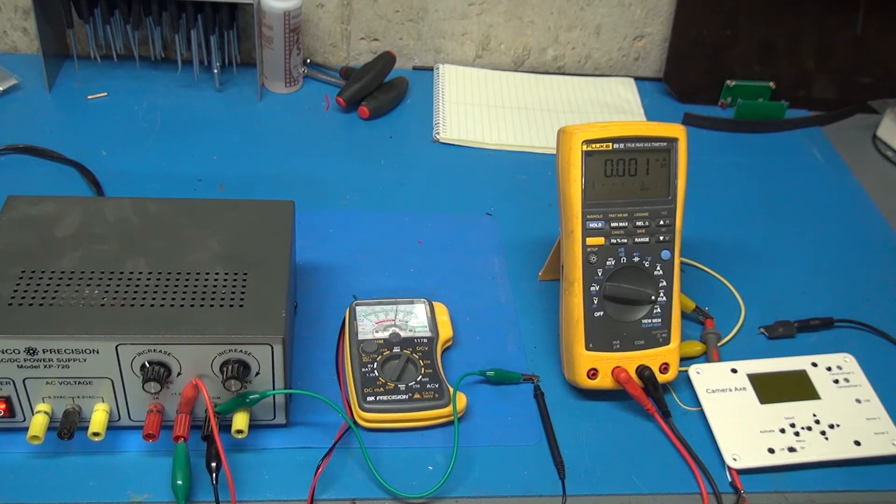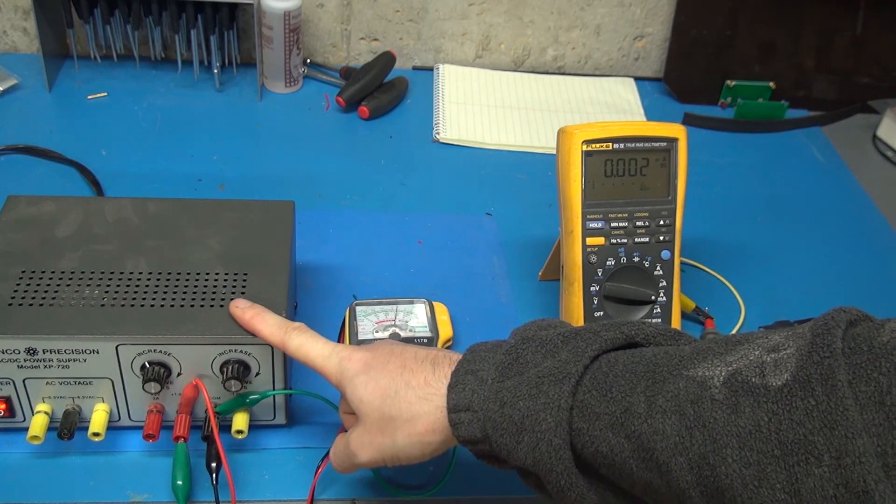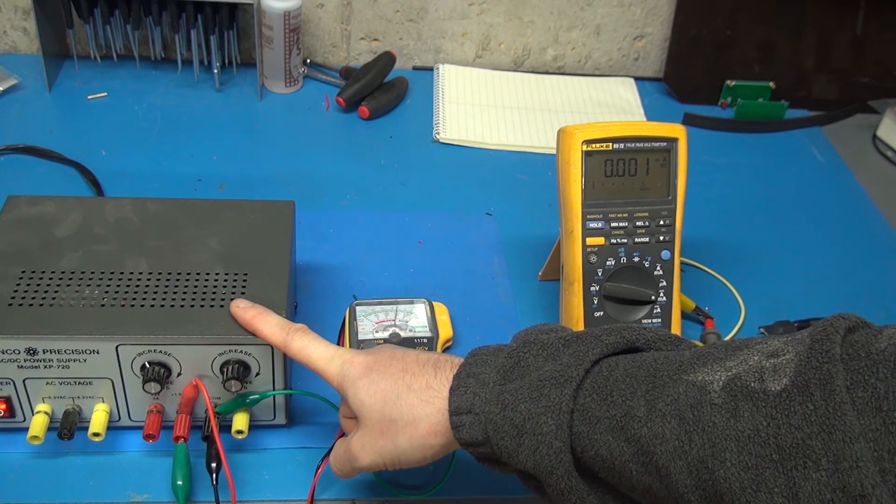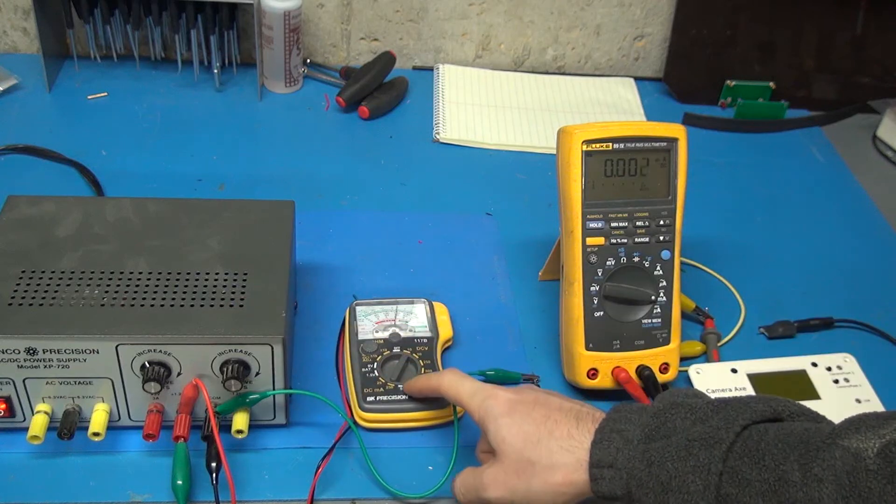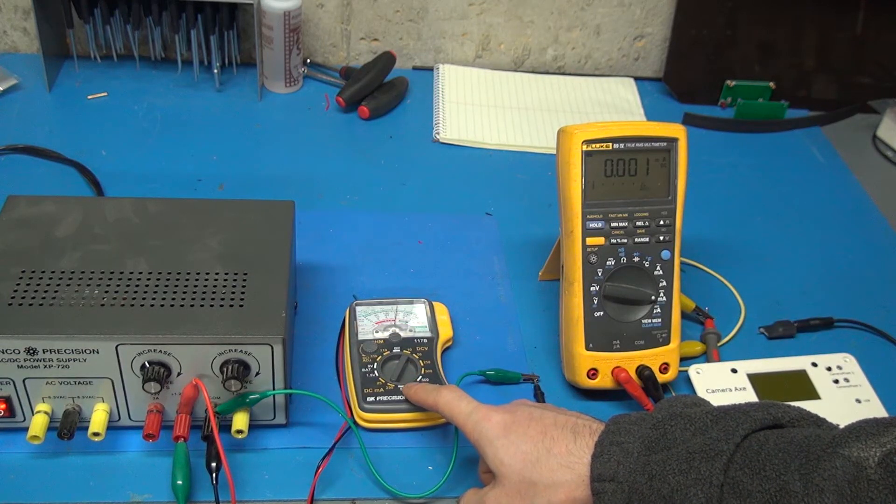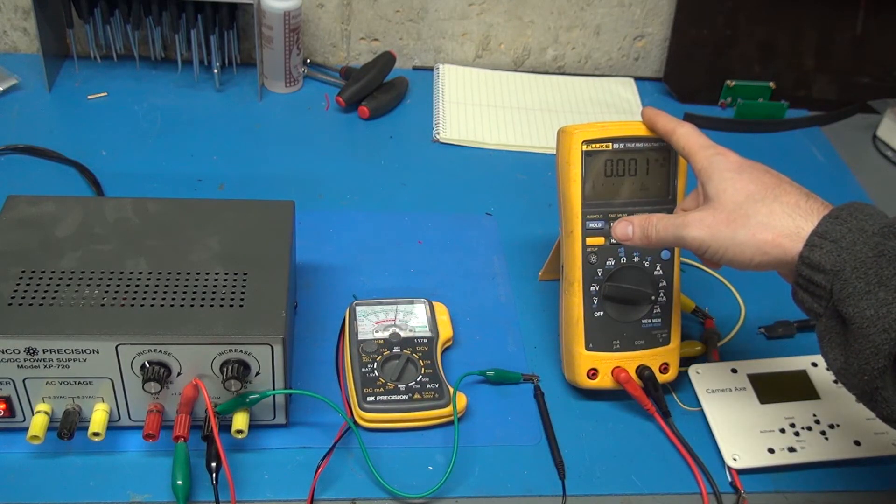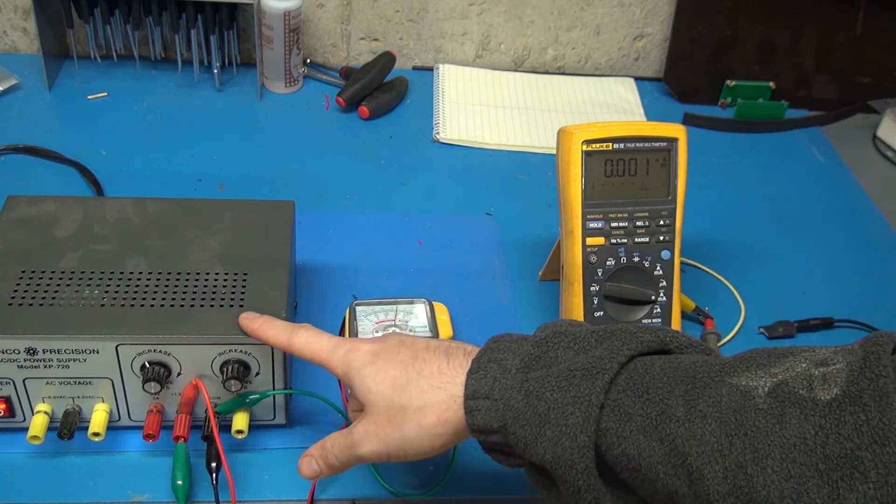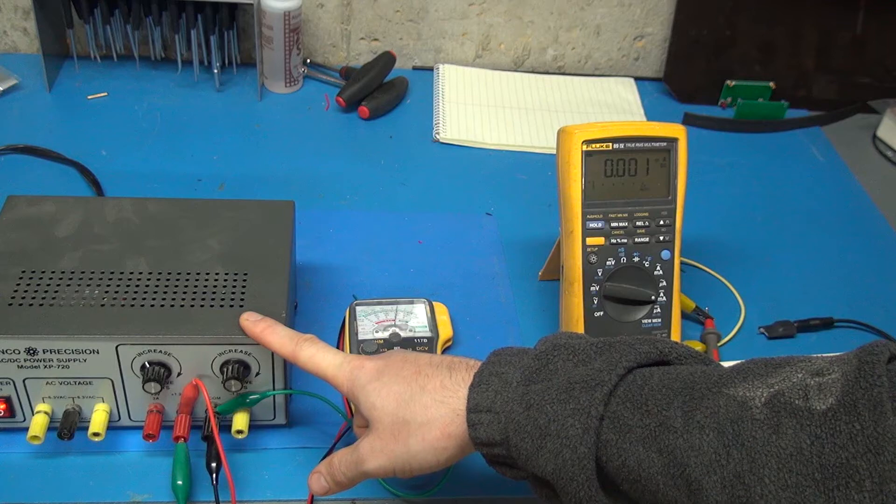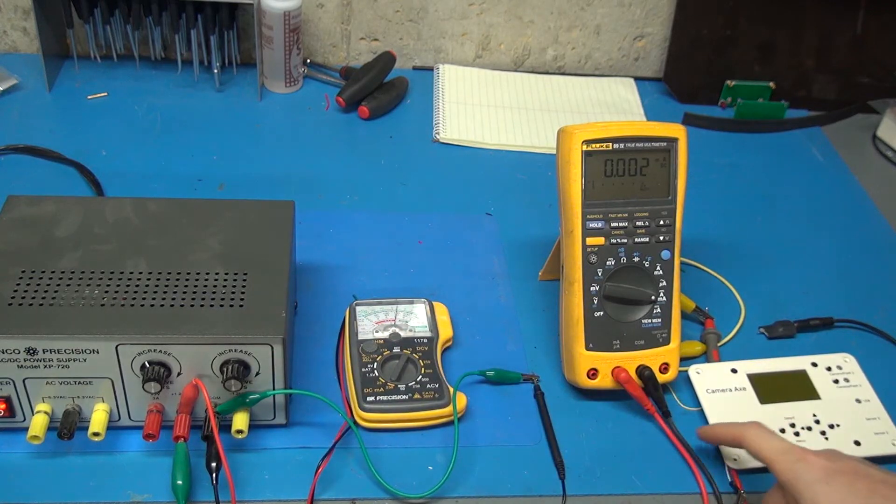Here I'm going to show you how I collected the different power consumptions of the Camera Axe. Here's a variable voltage and current power source. This voltage meter is just recording the voltage being output. This is reporting the current being consumed by the Camera Axe from the power source.